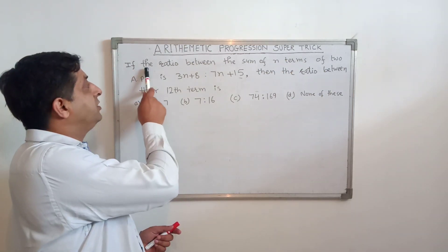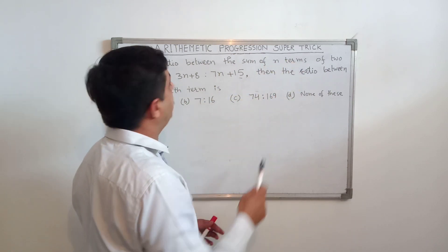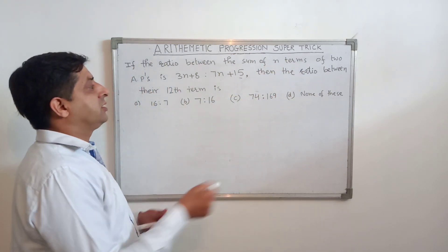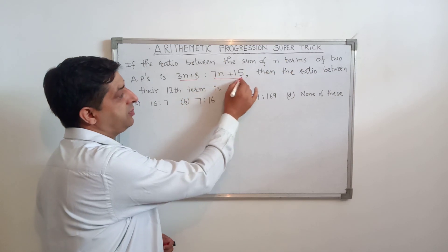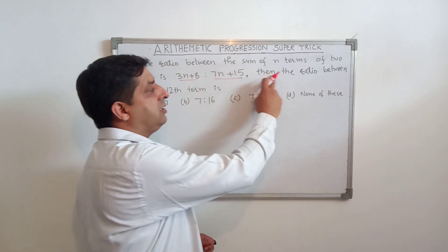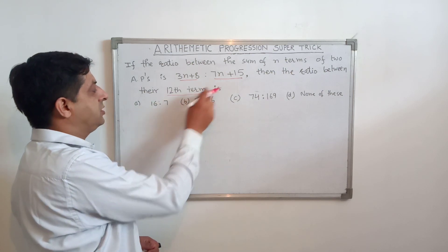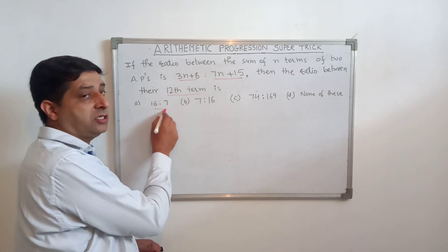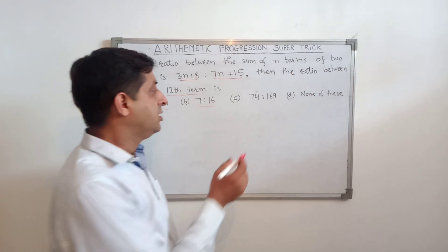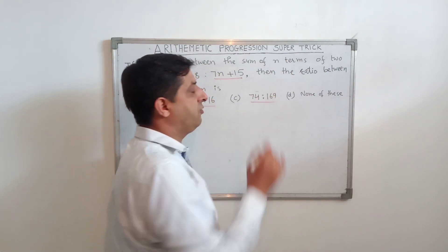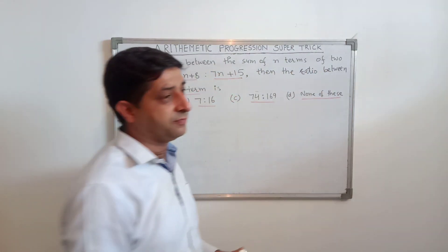The question is: if the ratio between the sum of N terms of 2 APs is (3N + 8) : (7N + 15), then the ratio between the 12th terms is — first option: 16:7, second option: 7:16, third option: 74:169, and the last option: none of these.